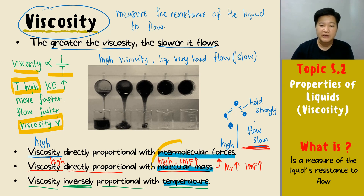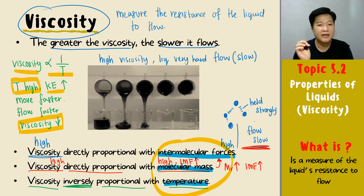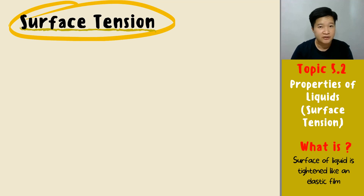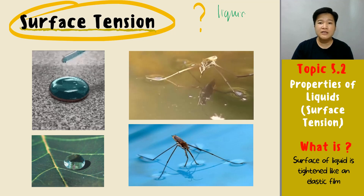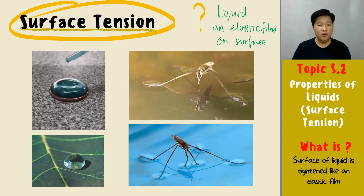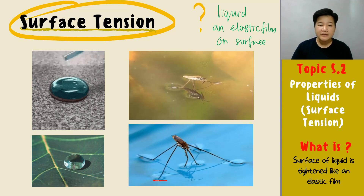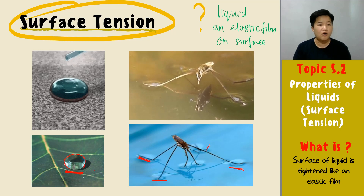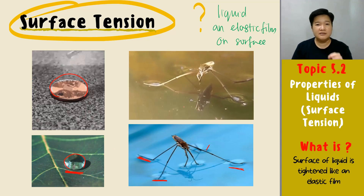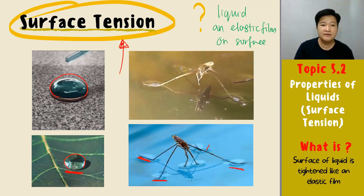Those are the three factors affecting viscosity. Last but not least, let's look at surface tension. Liquid has a surface tension, which means it has an elastic film on the surface. This is shown by examples such as insects floating on liquid, droplets of water on a leaf, and the formation of liquid droplets — all because of surface tension.